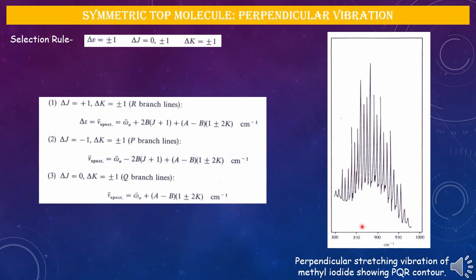By checking the line spacing as well as the intensity of the lines in an IR spectrum, we can determine what kind of molecule it is, what symmetry elements are present, and whether the vibration is parallel or perpendicular. From the IR spectra alone, we can get a clear idea about molecular shape.